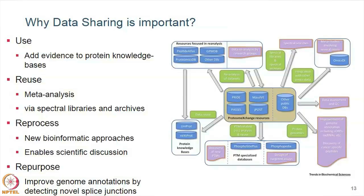What are the uses of this data? One thing is publication — the publisher requires you to submit data somewhere for validation. The primary use is why you generated the data. Then it adds evidence: in UniProt, for example, all the manually curated, validated protein sequences draw evidence from publications. Then there is reuse and meta-analysis — you can take data from 10 different datasets similar to your work that you never knew existed, just by searching a resource for, say, colorectal cancer.